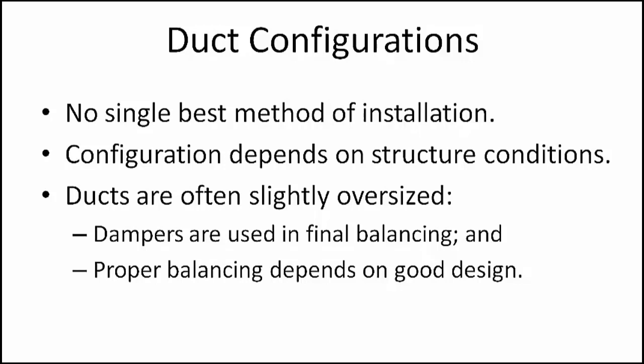The duct configuration selected for use depends on conditions in the structure where the equipment is to be installed. In an actual duct system design, the ducts are often slightly oversized. Dampers are used for the final balancing of the system. Balancing the system is an adjustment process — the air supply to one room is reduced and then that to the other room is increased. The object is to obtain the desired air temperatures in all rooms equally. Proper balancing depends on good design, and a duct system that is easily balanced will show a minimum increase in pressure loss after balancing is complete.